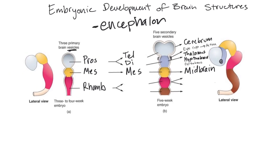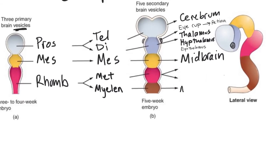The rhombencephalon divides into the metencephalon and the myelencephalon — note this is different from the myelin sheath, which has a 'y' in it. The myelencephalon becomes the medulla oblongata. Despite what some documentary may have claimed, the medulla oblongata is for breathing and reflexes — it has nothing to do with aggression or anger.